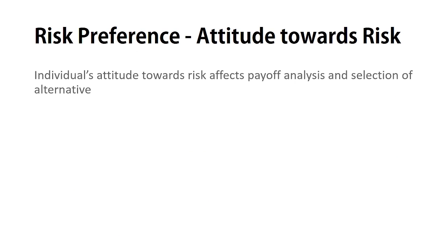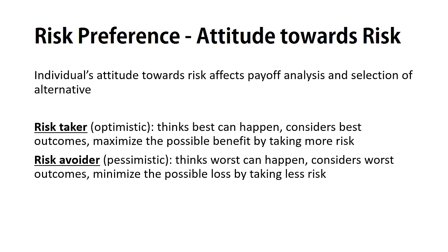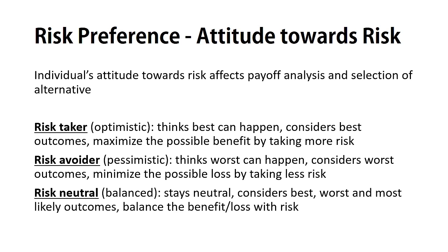The way different alternatives are analyzed is heavily influenced by an individual's attitude towards risk, also called risk preference. A risk taker who has an optimistic approach thinks the best can happen and therefore considers only the best outcomes, maximizing possible benefits and taking more risk. On the other hand, a risk avoider with a pessimistic approach focuses on worst outcomes and tries to minimize possible loss by taking lesser risk. A risk-neutral person stays balanced and considers all best, worst, and most likely outcomes.